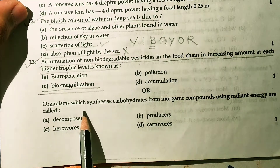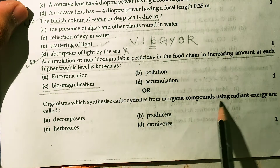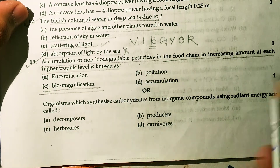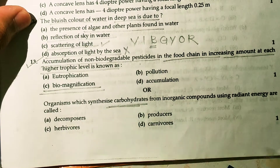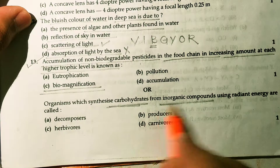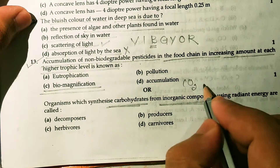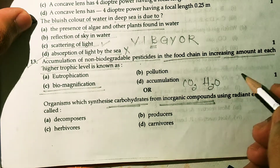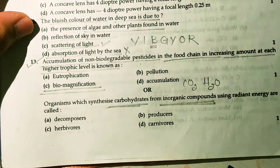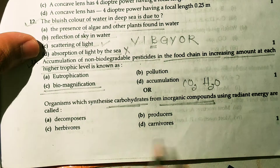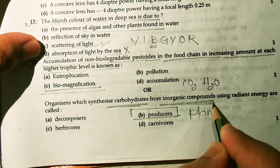Question number 14: organisms which synthesize carbohydrates from inorganic compounds using radiant energy are known as what? Inorganic compounds means carbon dioxide and water — these are inorganic, made by nature. The answer is producers — the plants.